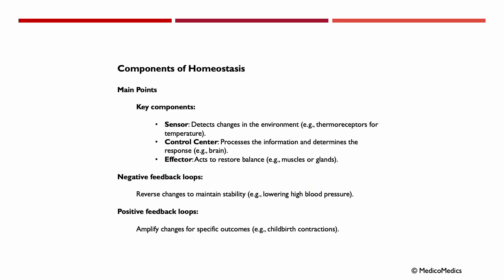What are some components of homeostasis? The key components include sensors that detect changes in the environment — for example, thermoreceptors for changes in temperature. We have the control center, which processes information and determines responses, like our brain. And effectors, which act to restore balance, for example, our muscles or glands. Furthermore, we have the negative feedback loop and the positive feedback loop.